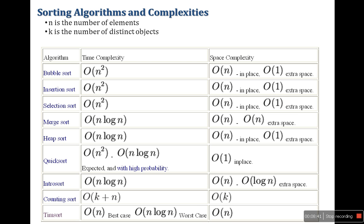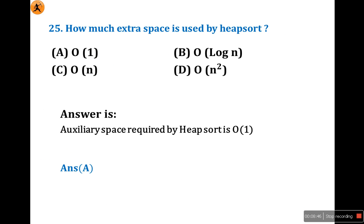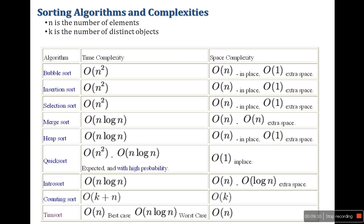Please go through this table. It is very important. Now question 25: How much extra space is used by Heapsort? Auxiliary space required by Heapsort is O(1). Almost all auxiliary space required in extra space is O(1). Keep in mind it is not O(n). Please look at this table and practice it. Remember all the algorithms' time complexity and space complexity.